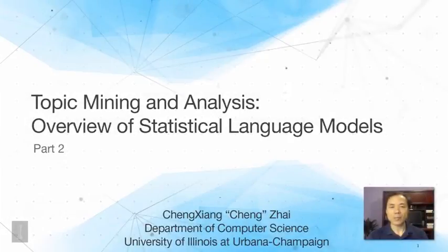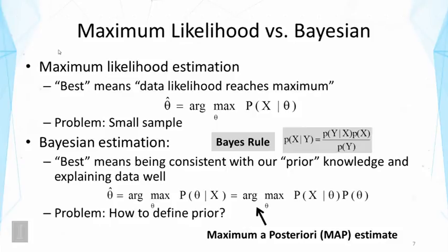Let's talk about the two different ways of estimating parameters. One is called maximum likelihood estimation and the other is Bayesian estimation. In maximum likelihood estimation, we define 'best' as meaning the data likelihood has reached the maximum. Formally, the estimate is given by argmax of the probability of X given theta, where argmax returns the argument that gives the function its maximum value.